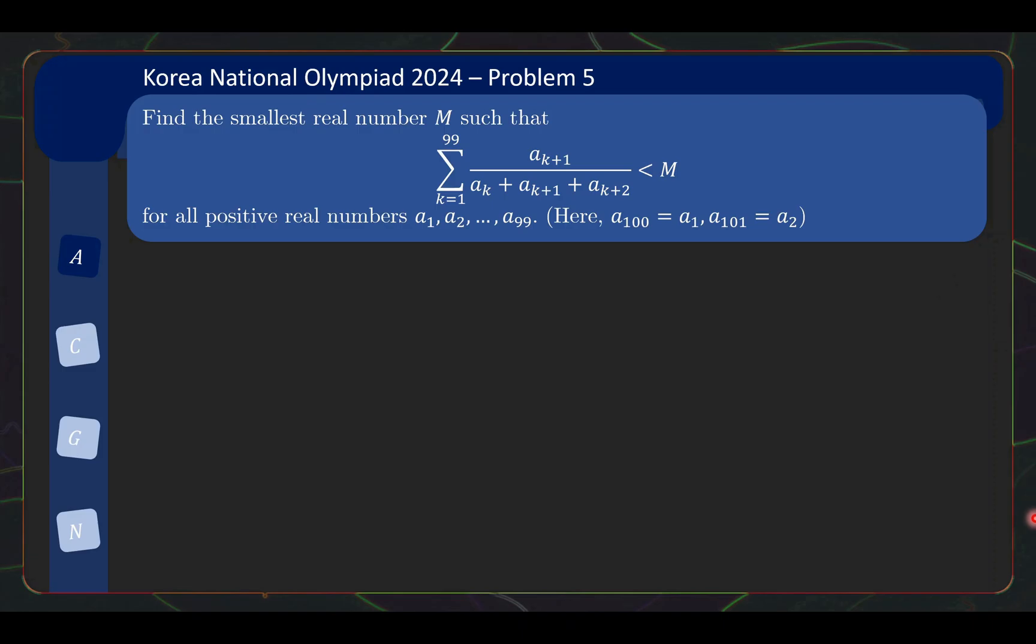Before going to the solution, it turns out that the solution is actually quite easy to motivate. When you are faced with a problem like this, you might want to first try out some special cases or special values and see what values m might be. So if we try the obvious candidate of a1 equals a2 equals all the terms equal, then we see that each fraction here is going to be one third and this sum is going to be 33.